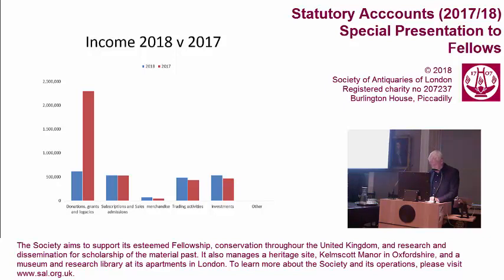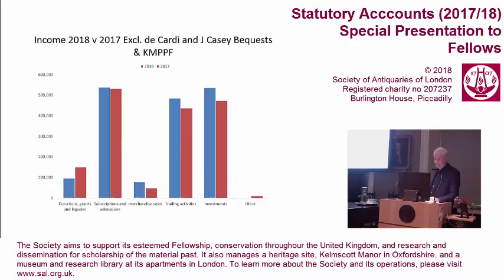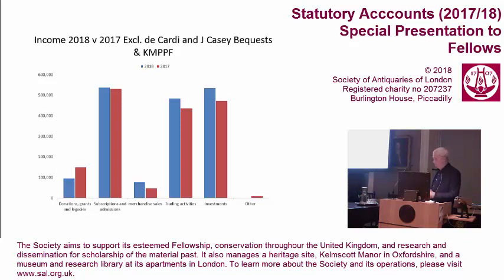And just to show that in yet another format: if you extract from those columns the Counts of Past, Present and Future income, and the Piccardi and John Casey bequests, then that's what it looks like — so broadly a similarity across the two years in terms of the different types of income.